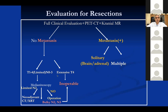There is one exception: if there is solitary brain or adrenal metastasis, and the patient has N0 disease, and the brain or adrenal metastasis can be surgically removed, we do resection. First adrenalectomy is performed, then resection of the primary lung tumor.